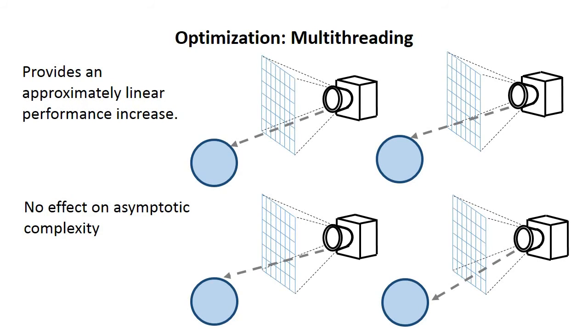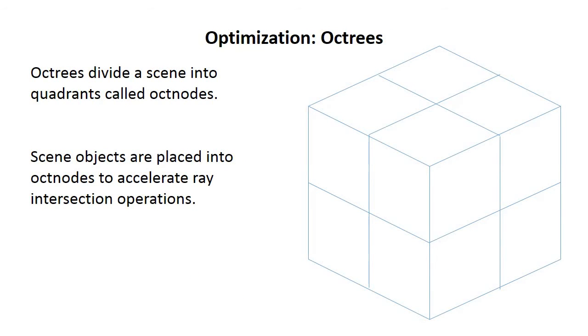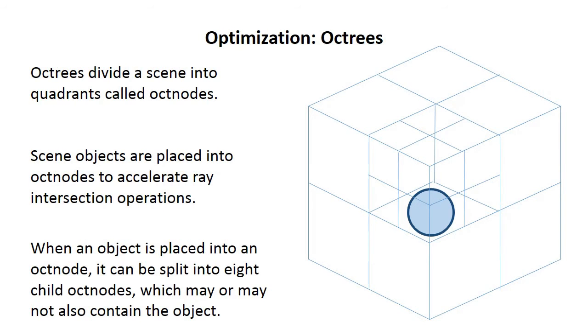So these are octrees. Octrees divide a scene into quadrants called oct nodes. Scene objects can be placed into oct nodes to accelerate ray intersection operations. When you do that, you can split an oct node into eight child oct nodes, hence the name, which may or may not also contain the object.